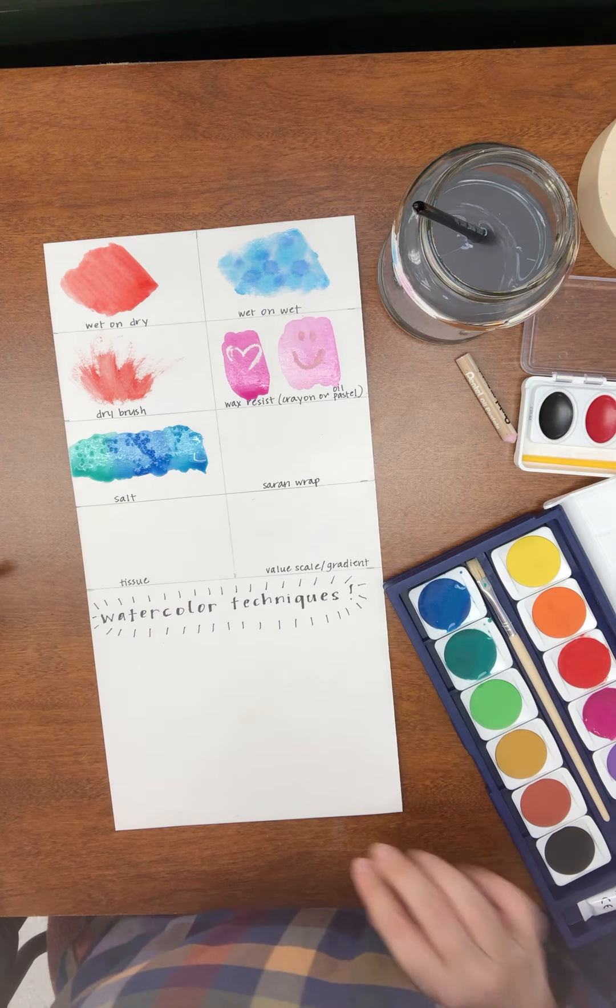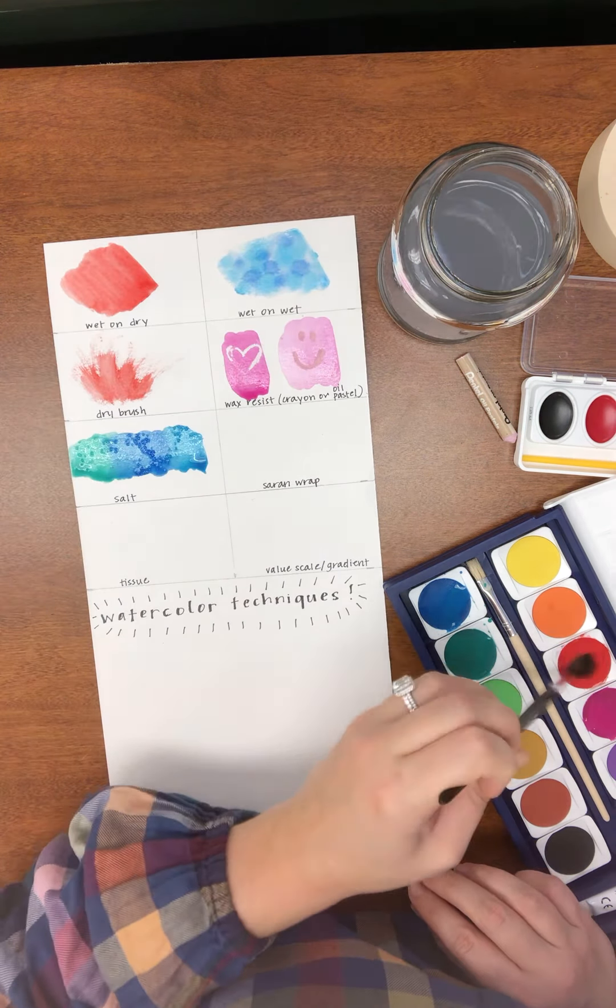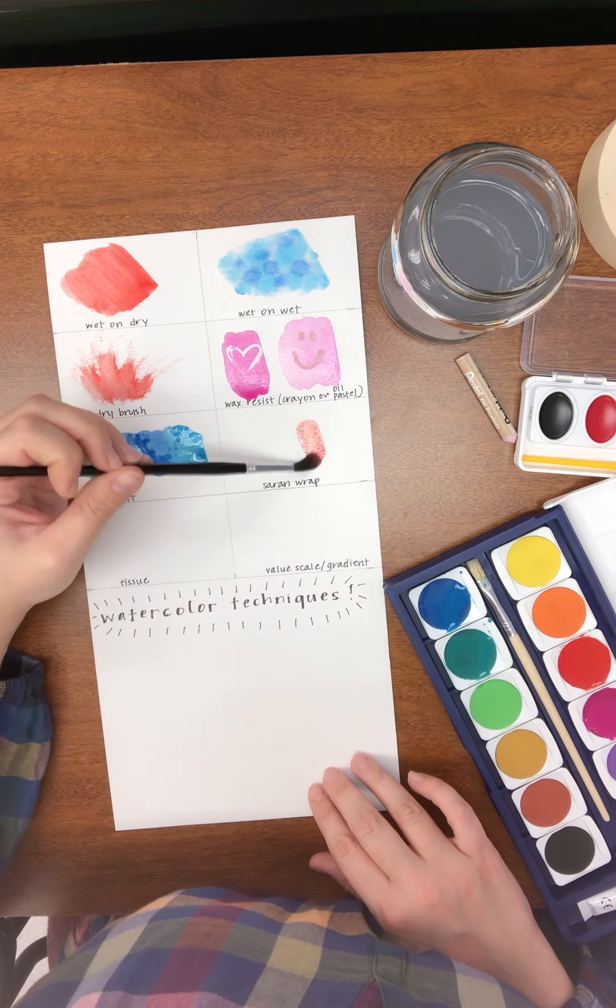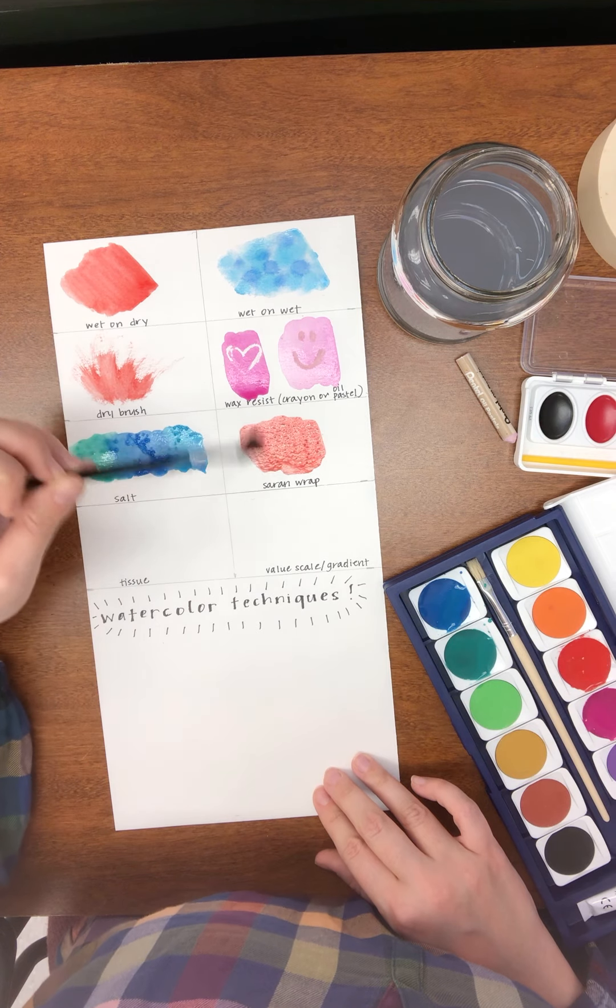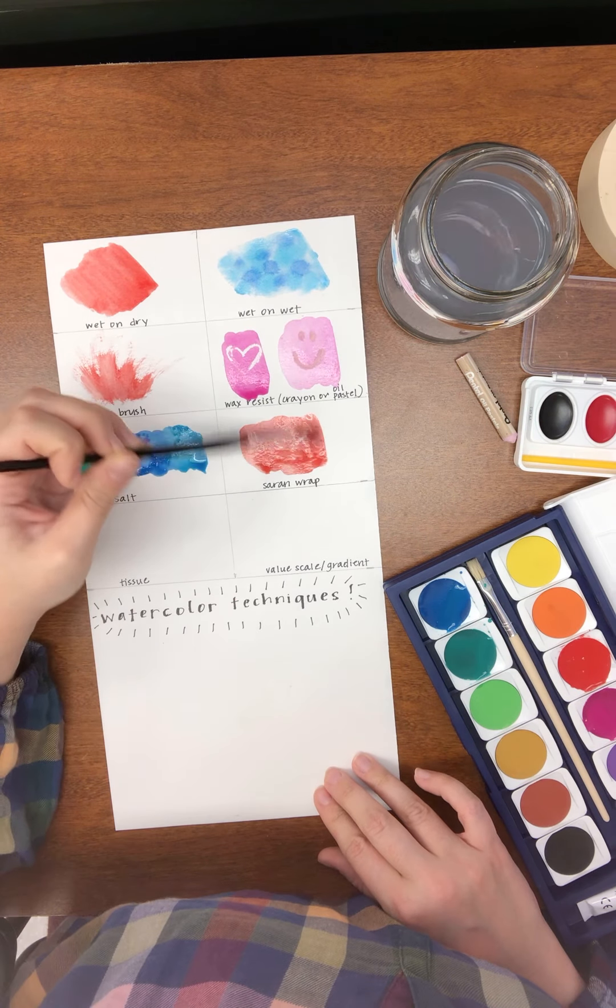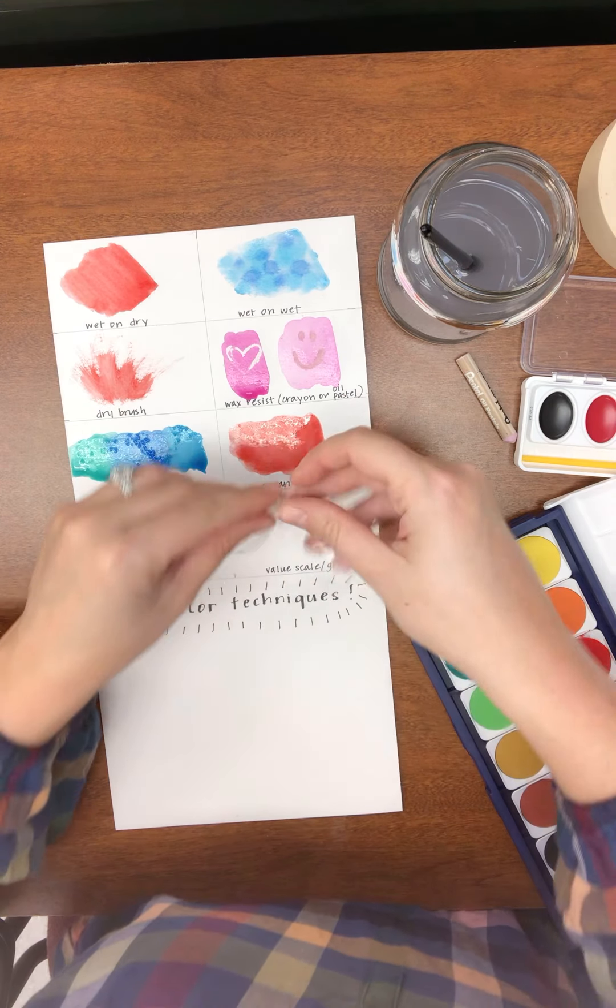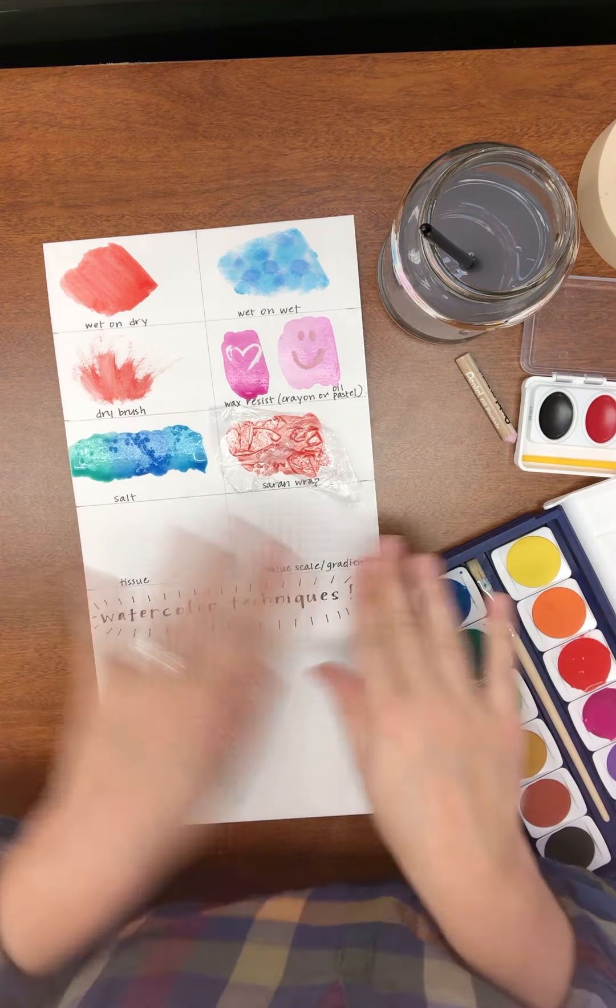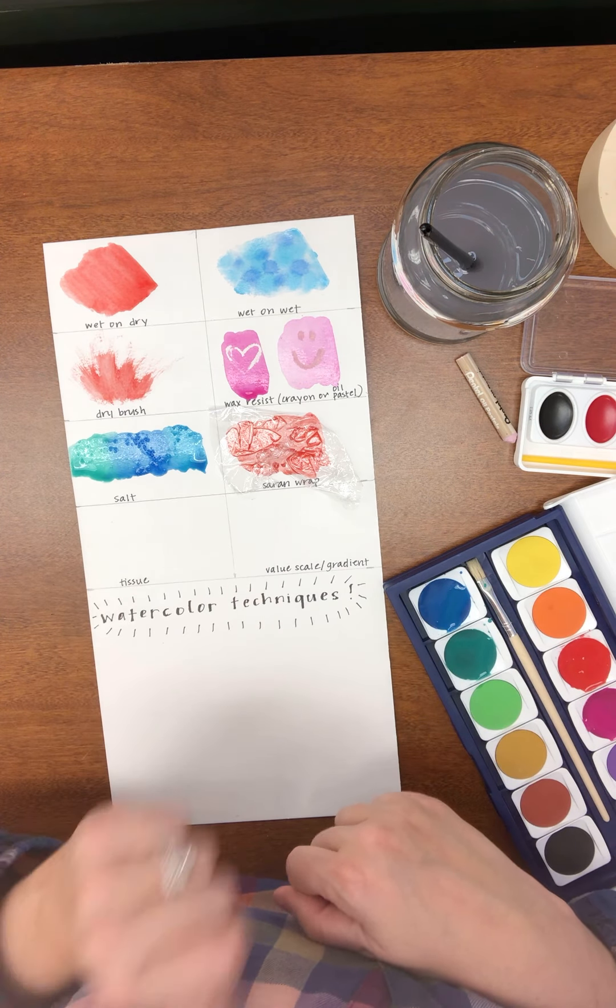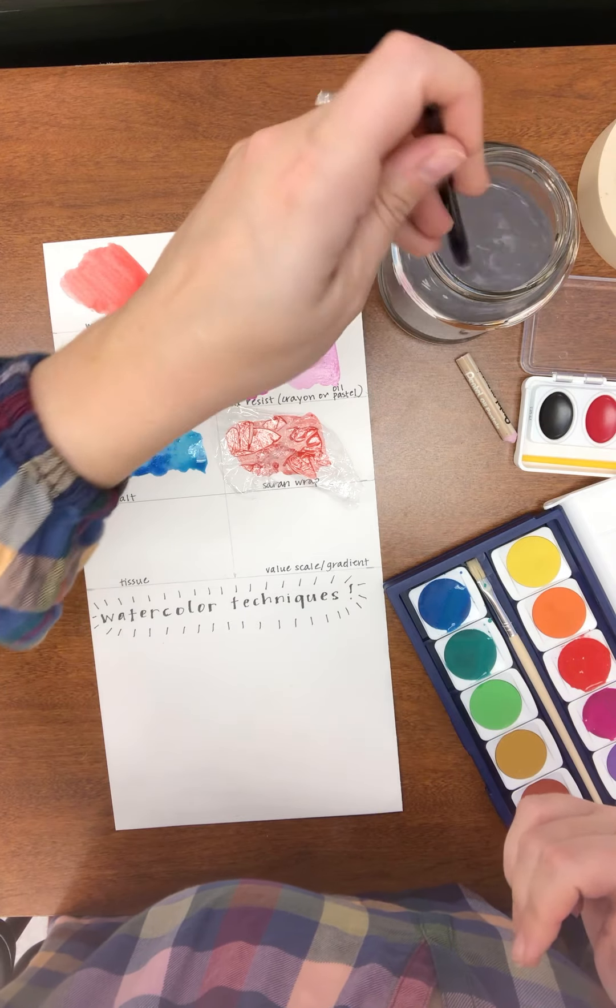So on to our next one. This one's pretty simple. We're going to do a saran wrap technique. I'm going to take some red, put that on my paper, add a little more moisture. And the piece of saran wrap that I had brought over, I'm going to crinkle that up, press it down, and I'm going to let that dry with the saran wrap on it. When it dries and I peel it off, I'm going to be left with a beautiful kind of crinkle texture behind.